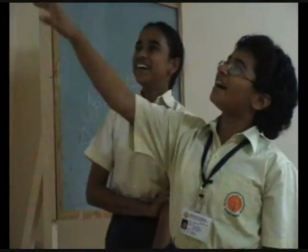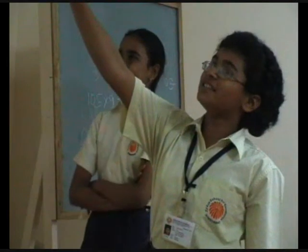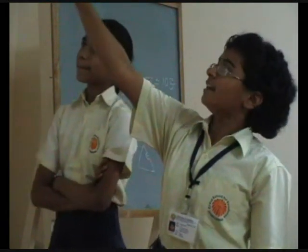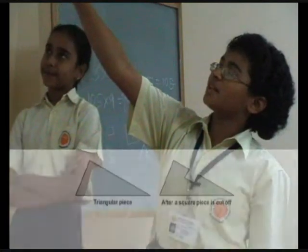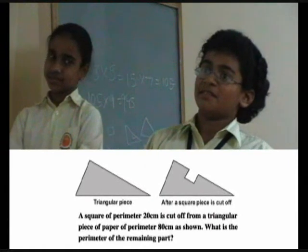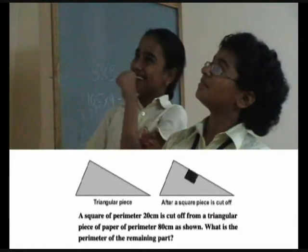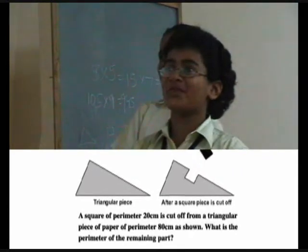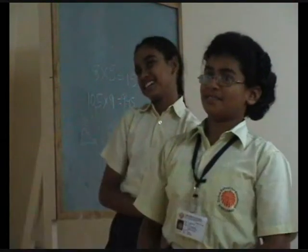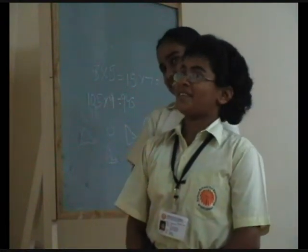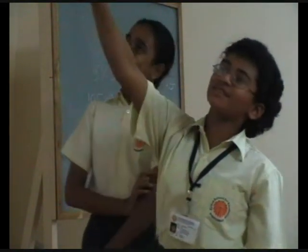Because I subtracted those 3 sides from the whole perimeter of the triangle — 80 cm. So I subtracted 5, 5, 5 and my answer came 65. Why did you subtract 5-5-5? Because it's cut out from the triangle, so it has to be removed. But why didn't you subtract 20? Because that one side is not there.